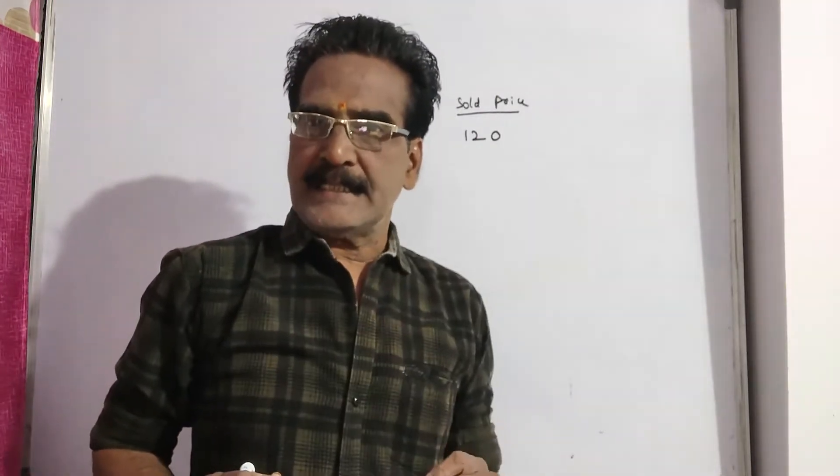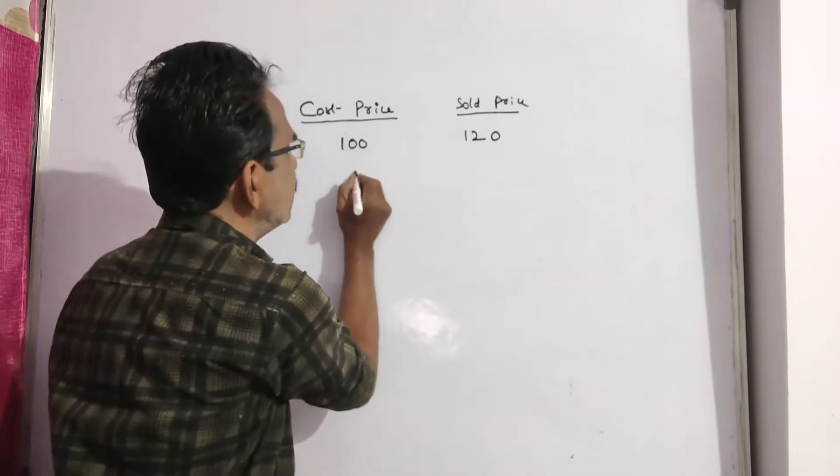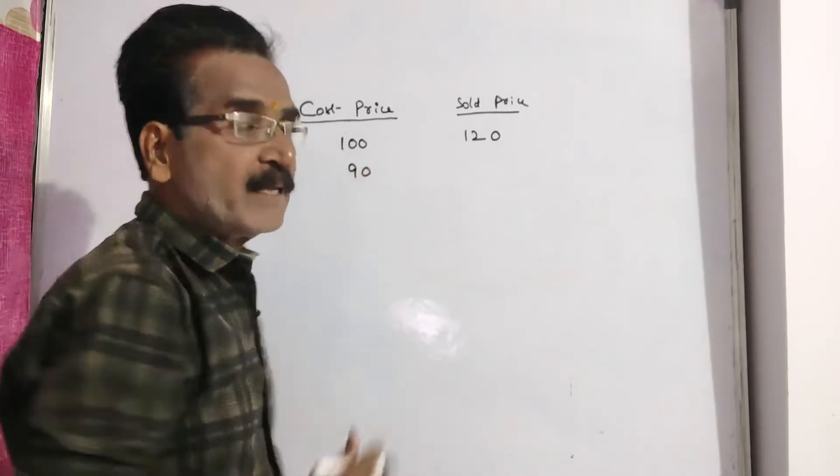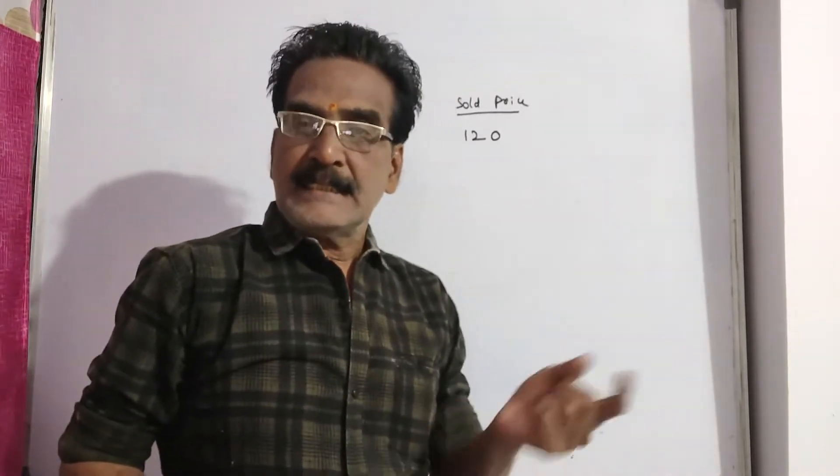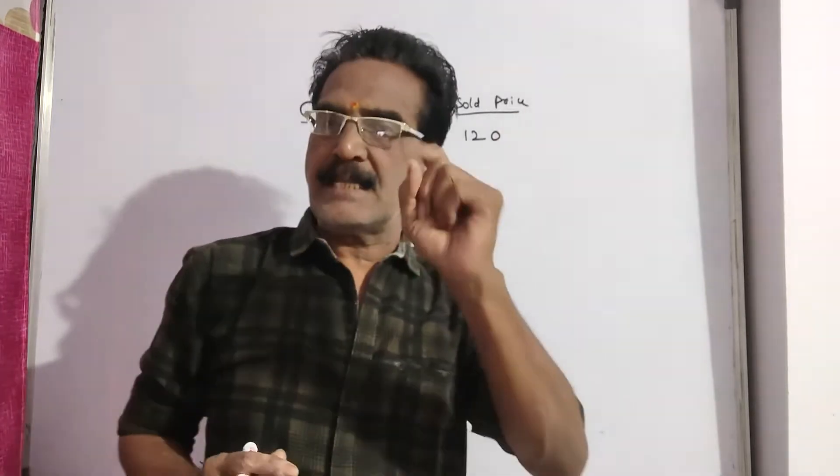Had she bought it 10% less, that is if she bought it at 90 rupees and sold it 30 rupees less than the earlier sold price, she makes a profit of 20%.